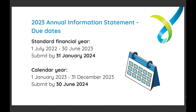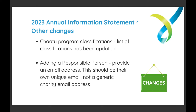For those operating on a calendar year, your reporting for 2023 hasn't ended yet. Your 2023 AIS will be due by 30 June 2024, and you'll have access to complete it in the charity portal from early next year.